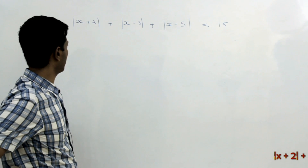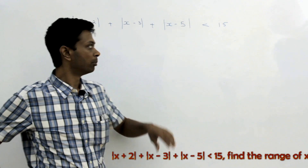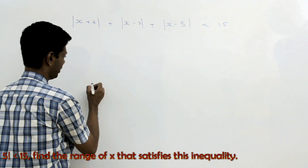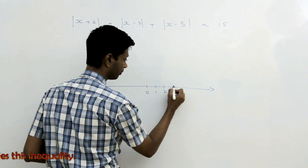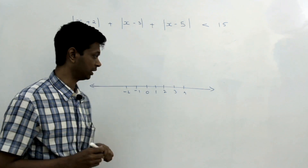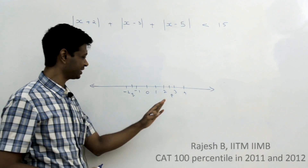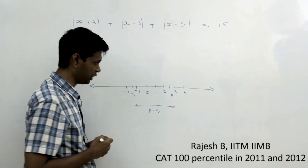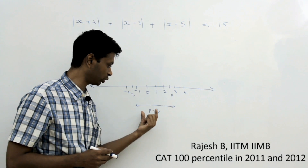Let us start with this: we have |x+2| + |x-3| + |x-5| less than 15. Before going on to this question, I want to discuss one idea with modulus along with the number line. The number line is nothing but a line that has all real numbers on it. Now particularly if you have any two points on the number line, let us say p here and q here — the distance between these two points is nothing but p minus q. Very simple idea but extremely powerful idea.